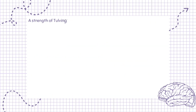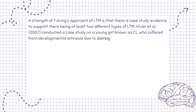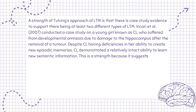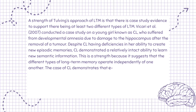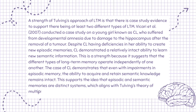A strength of Tulving's approach to LTM is case study evidence supporting at least two different types of LTM. Vickory et al., 2007, conducted a case study on a young girl known as Cl, who suffered developmental amnesia due to hippocampal damage after tumour removal. Despite deficiencies in creating new episodic memories, Cl demonstrated a relatively intact ability to learn new semantic information. This is a strength because it suggests that episodic and semantic memory operate as distinct systems, which aligns with Tulving's theory of multiple memory stores.